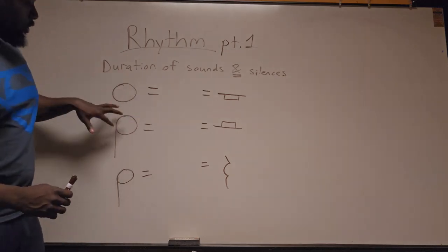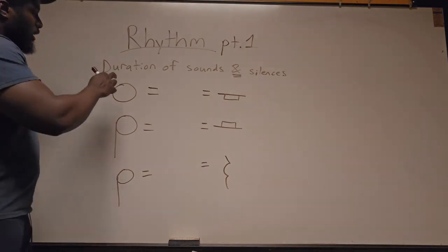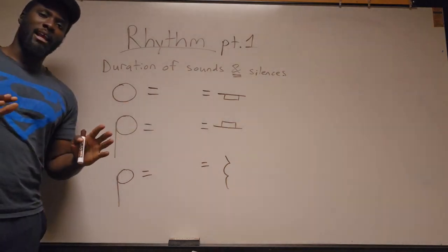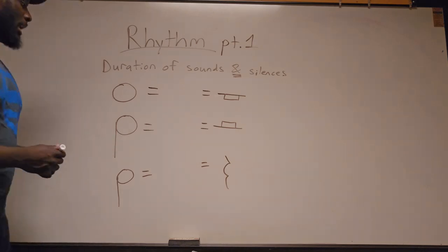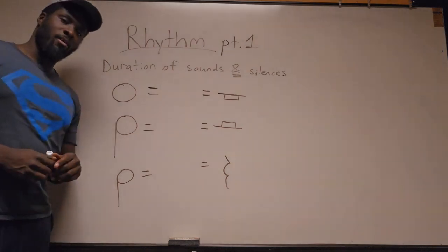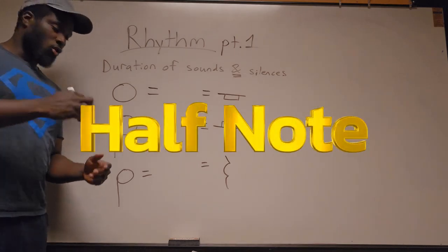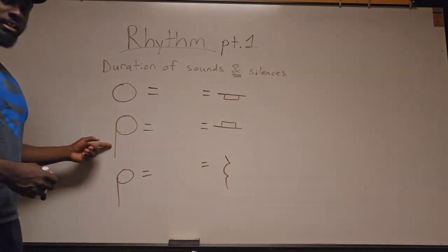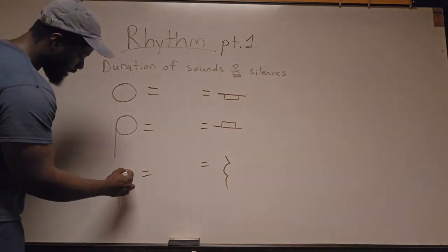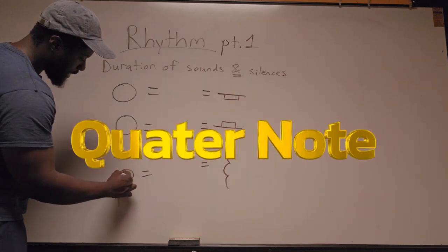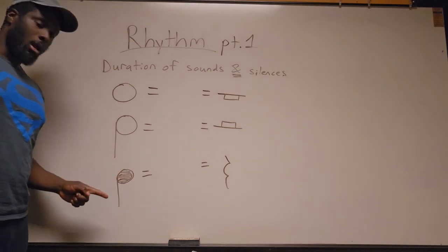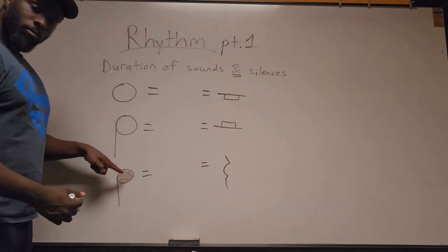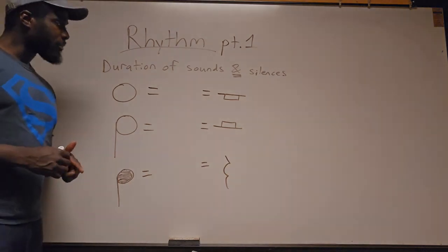Within music we have certain notes. This right here is called a whole note — it's a circle and it's blank, or white. The second note is also a white circle but it has a stem, and this is called the head of the note. You have the head and the stem, and it is also white. The third note looks just like the second but it's colored in — in music notation that color would be black — and it also has a stem.